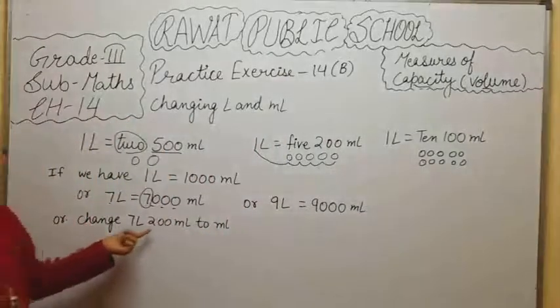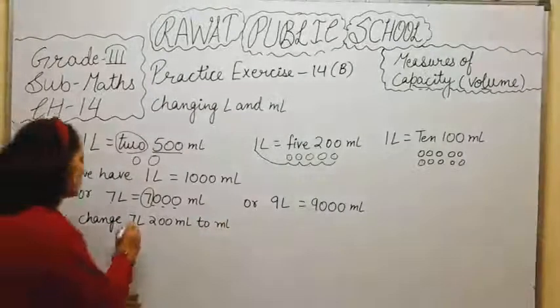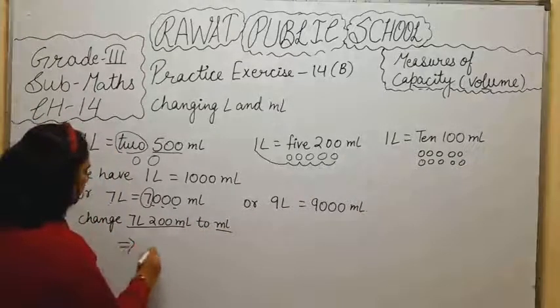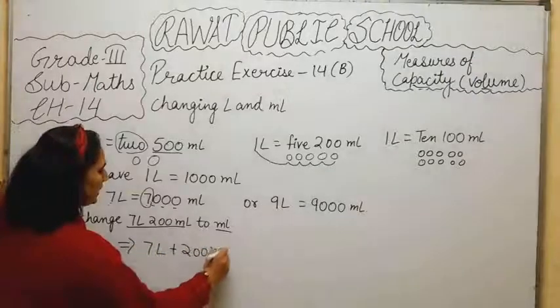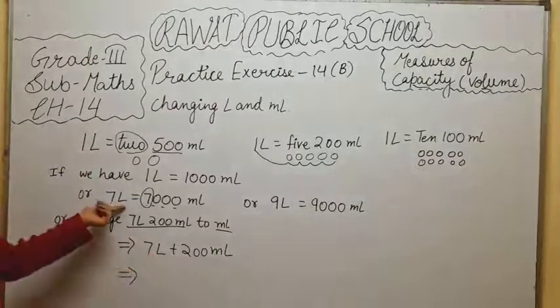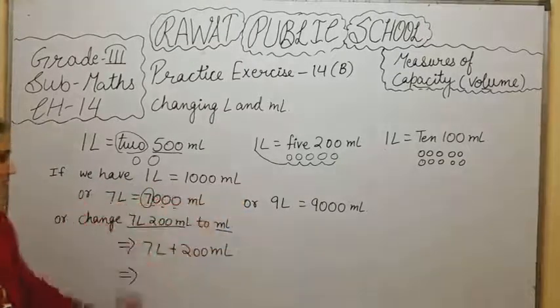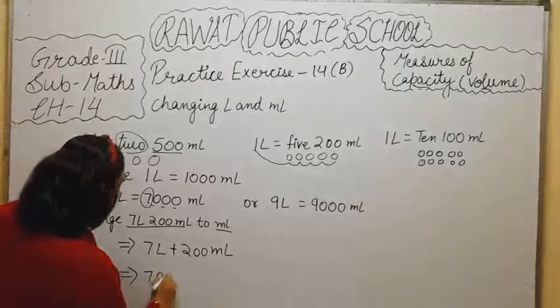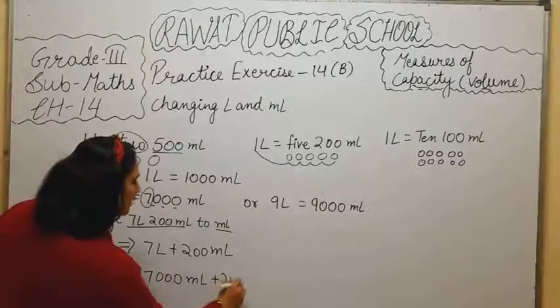Here, we have to change 7 liter 200 ml to ml. We have to convert this into ml. How we have to convert it? First of all, what we have to do? 7 liter plus 200 ml. Here, 7 liter. We are already talking about that 1 liter contains 1000 ml. So, we will convert this 7 liter into ml. How much milliliters? 7000 ml plus 200 ml.